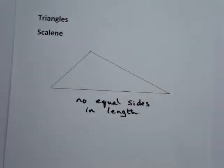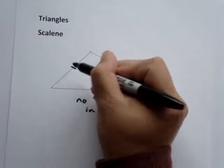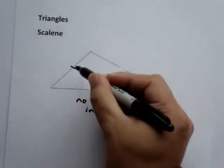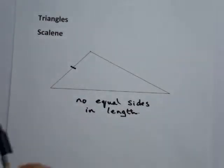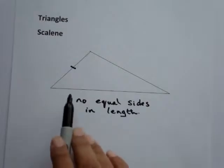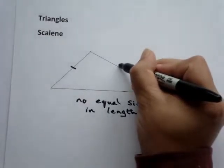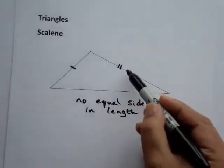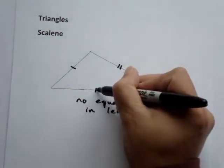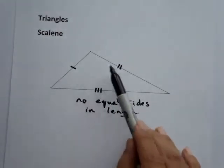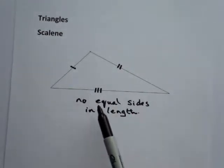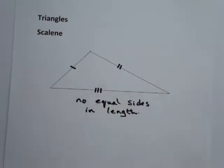Whenever we signify the lengths of a triangle, we use hatch marks or tick marks. If we use one tick mark on a side, that signifies that length. If there is another side which is the same length, then we use one tick mark. So in a scalene, there is no other side of the same length, so we use two tick marks, and then three tick marks. These tick marks signify that the three sides are all different lengths.